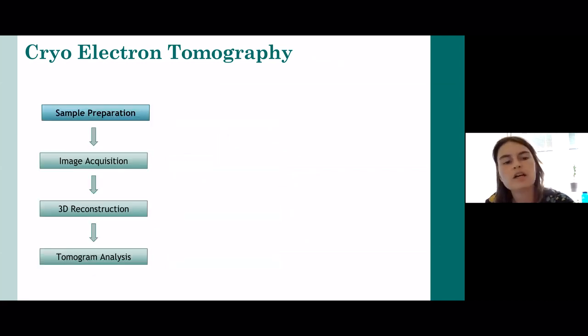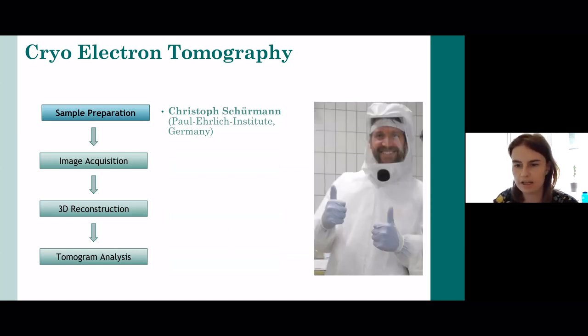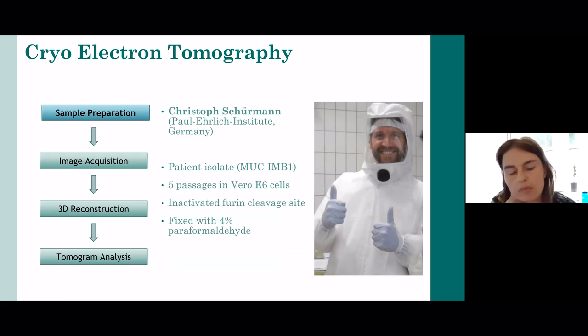Sample preparation is the first and most important step in this workflow. This was done by our colleague Christoph Schurman from Paul Ehrlich Institute in Germany. The most important details are that we got the sample that comes from a patient. We were lucky enough to get a patient isolate. Then we used VeroE6 cells to propagate the virus and get more virions.